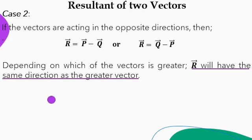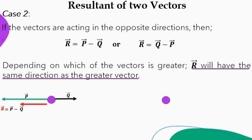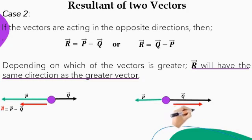Let's graphically look at that. If we have vector Q acting towards the right and vector P acting towards the left, and by looking at the length of the lines vector P is greater than Q, then the resultant points towards P and equals P minus Q. On the other hand, if vector Q acting towards the right is greater than vector P acting towards the left, the resultant points towards Q and equals Q minus P.